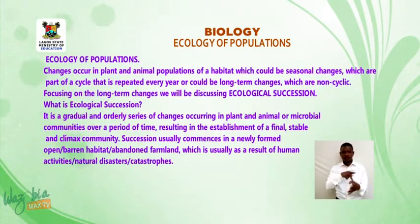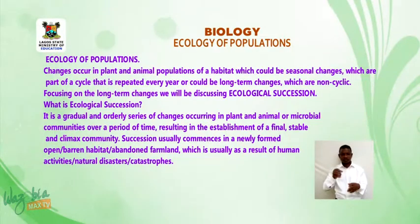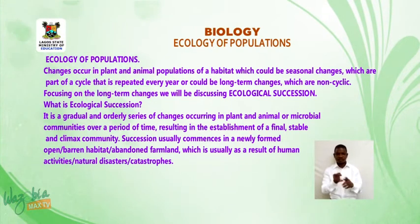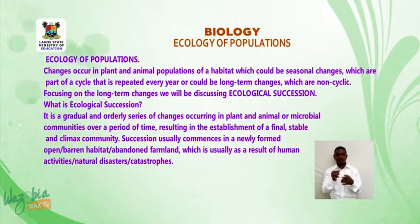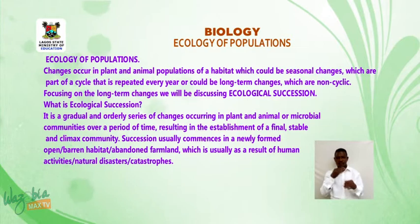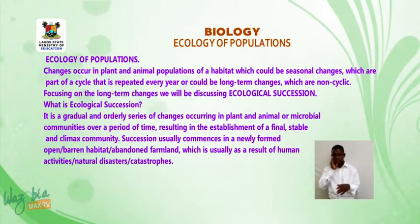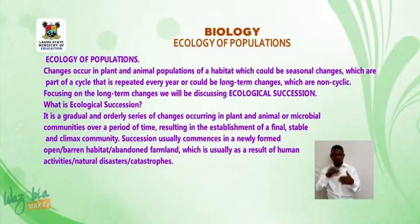Ecology of populations: changes occur in plant and animal populations of a habitat, which could be seasonal changes — part of a cycle repeated every year — or long-term changes which are non-cyclic. Focusing on long-term changes, we'll be discussing ecological succession. What is ecological succession? It is a gradual and orderly series of changes occurring in plant, animal, or microbial communities over a period of time.